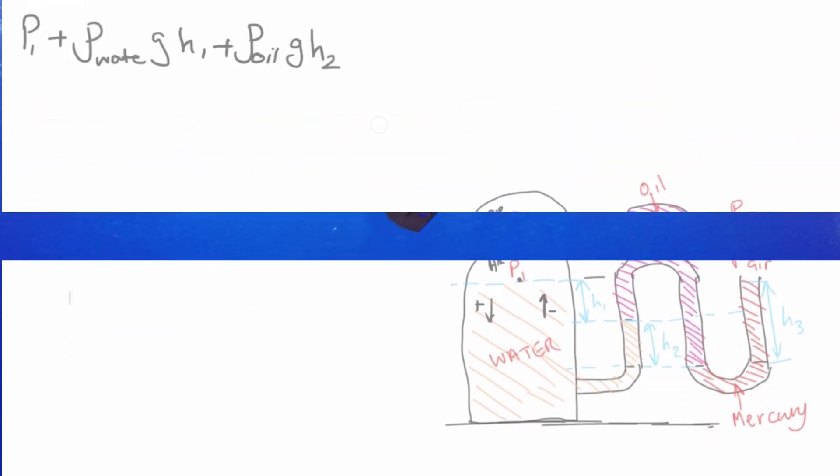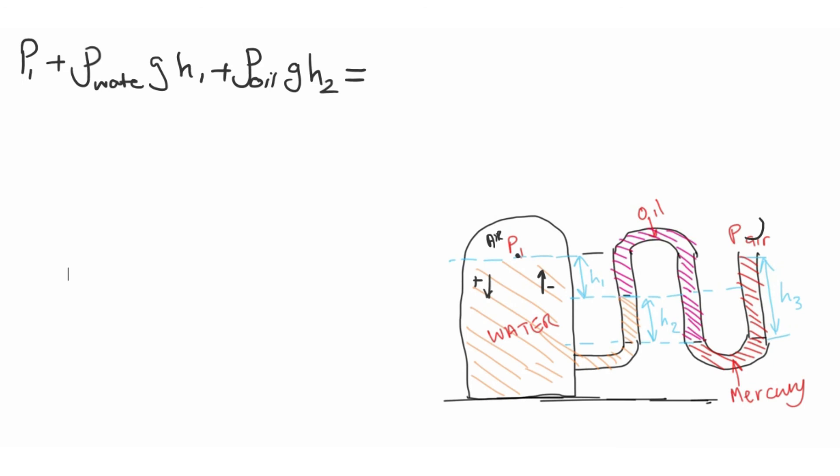So at this point, we are going to equate it to the atmospheric pressure plus rho of the mercury times g times h3. The pressure at this point is equal to the pressure at this point. That is why we equated those two.